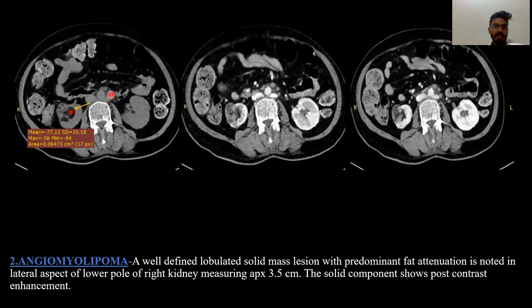Second case: Angiomyolipoma. There is a well-defined lobulated solid mass lesion with predominant fat attenuation noted in the lateral aspect of the lower pole of the right kidney, measuring around 3.5 cm. The solid component shows post-contrast enhancement.